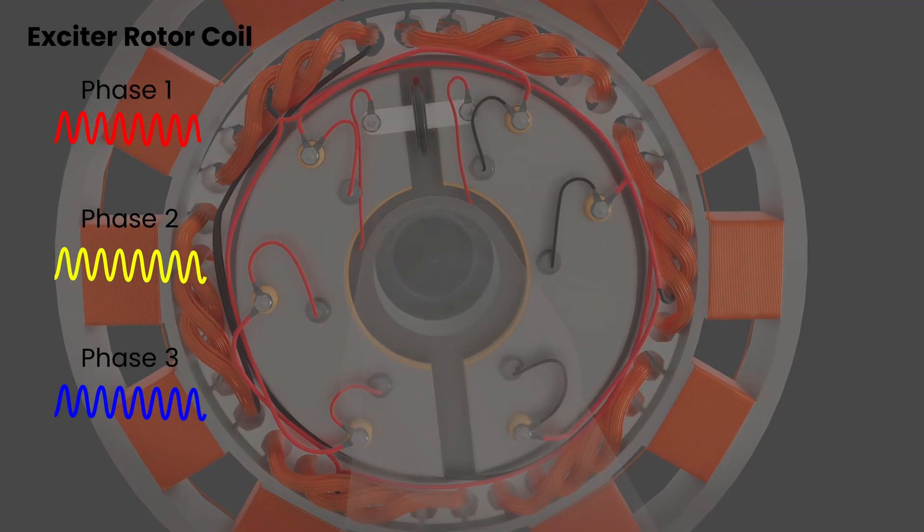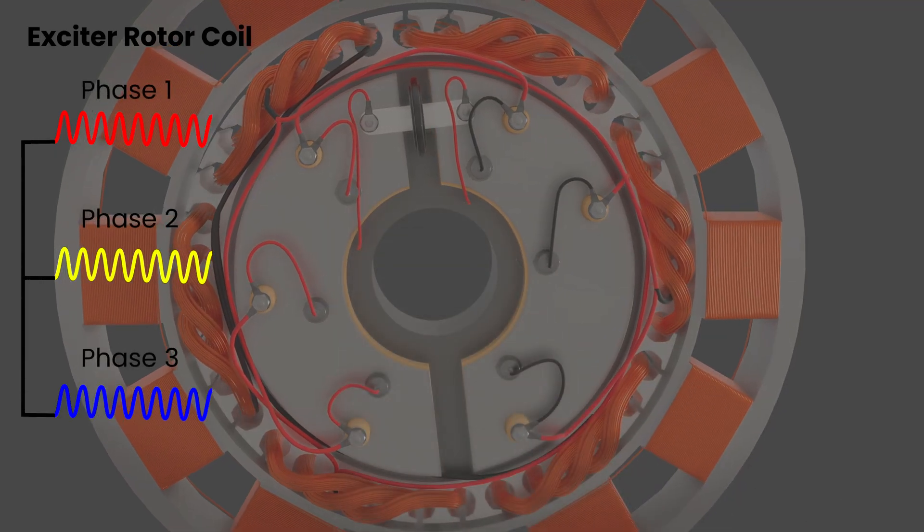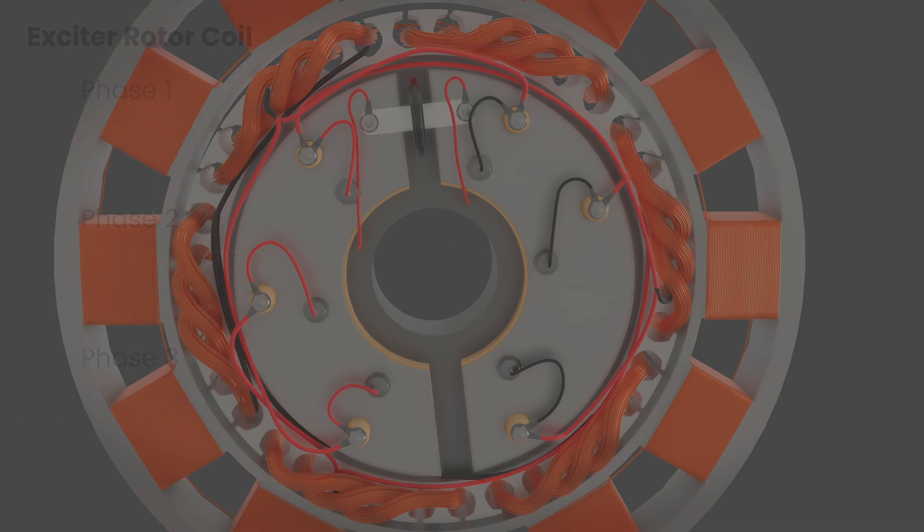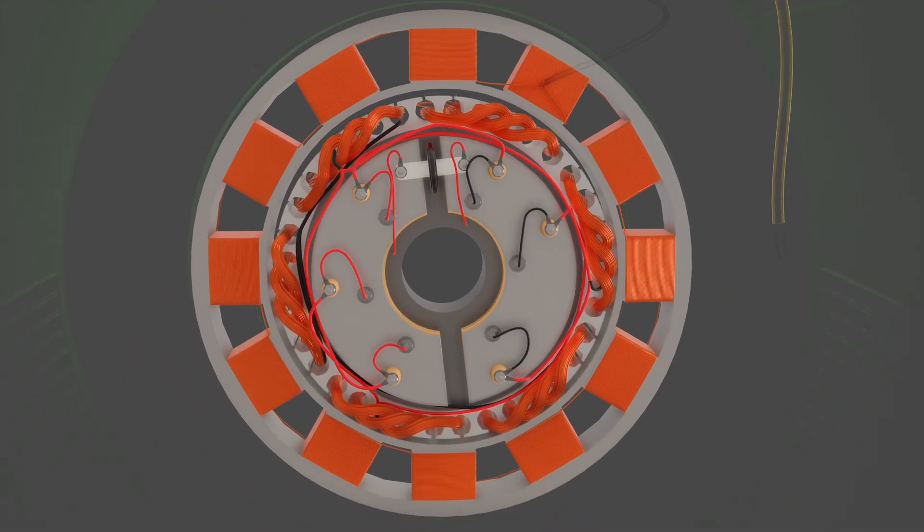One end of the three-phase exciter coils are connected in star configuration, neutral point, and the other ends are connected to the rectifier bridge. Each phase connects to the junction point between a positive and negative diode pair.